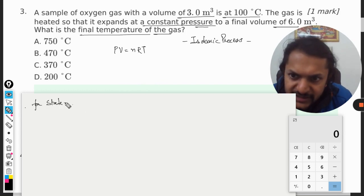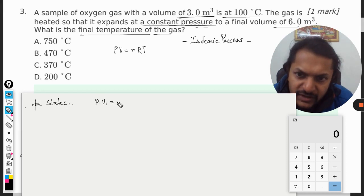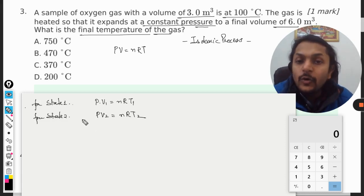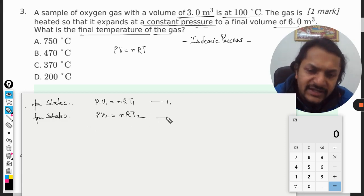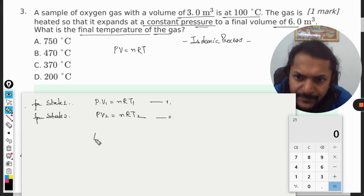So we can always say that at the first state, for state 1, it should be P₁V₁ = nRT₁. And for state 2, it will be P₂V₂ = nRT₂. Now what we do is we just divide these two equations by each other.